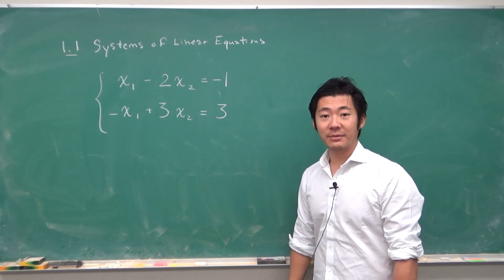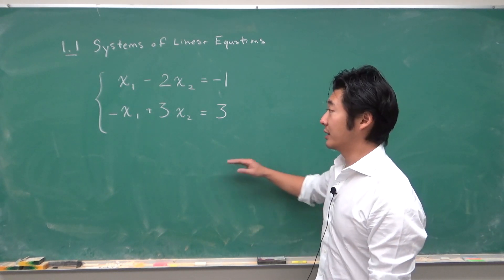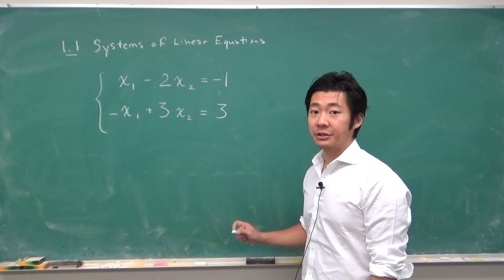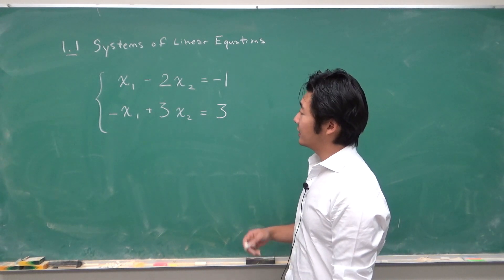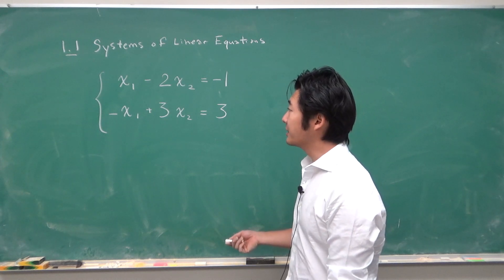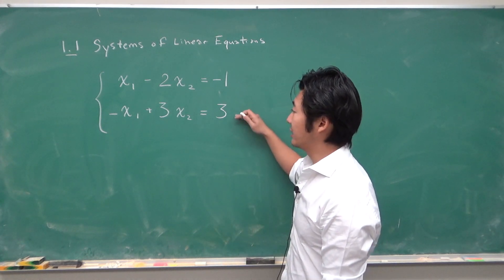So a system of linear equations is a collection of linear equations with the same variables. A solution to the linear system of equations are numbers for x1 and x2 or numbers for your variables that satisfy both of these equations at the same time.